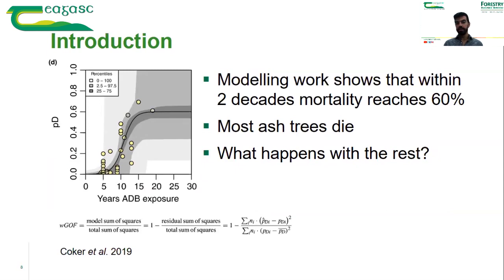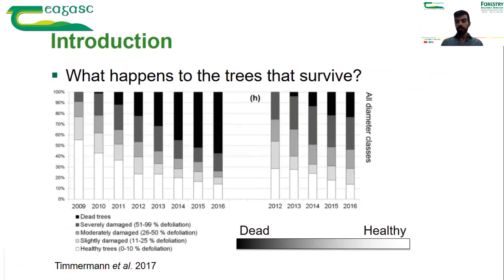Mortality stabilizes at around 60 percent. From those that don't die, another study shows the health condition of ash trees in two different sites in Norway: the left showing results for a site in the Atlantic part of Norway, and the right showing results for a site in the continental part of Norway.